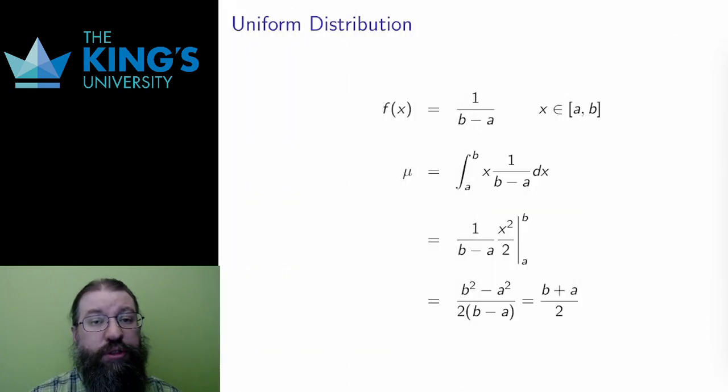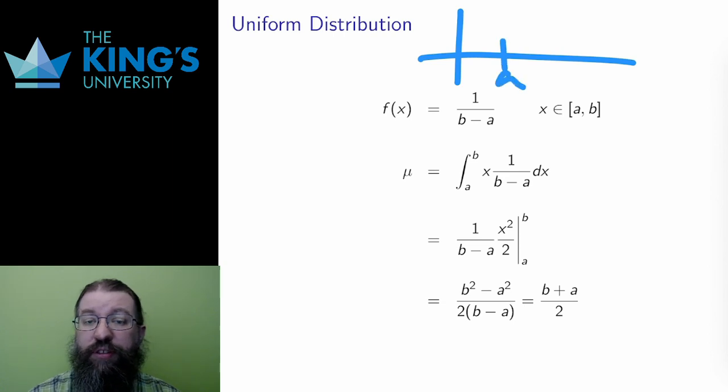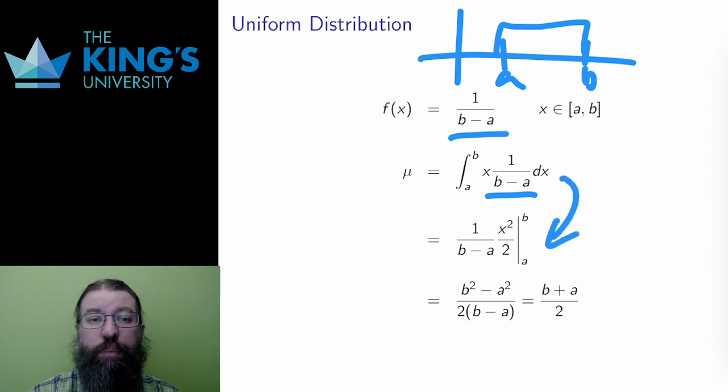I also introduced the uniform distribution in the previous video. What is the average of this distribution? Over a domain a to b, the uniform distribution was the function 1 over (b - a). This was the value that ensured that the area under the distribution was exactly 1. To find the mean, I integrate the variable times the distribution. And this is a pretty simple power rule integral, and it works out to (a + b) / 2.